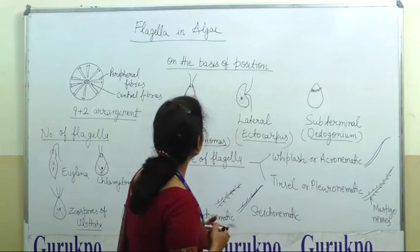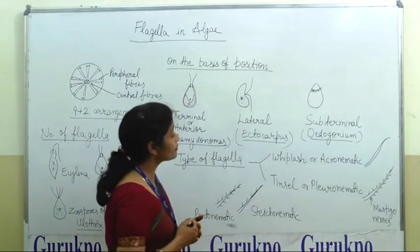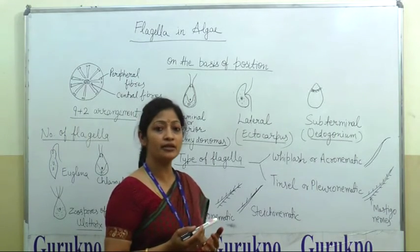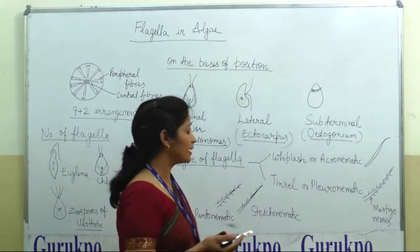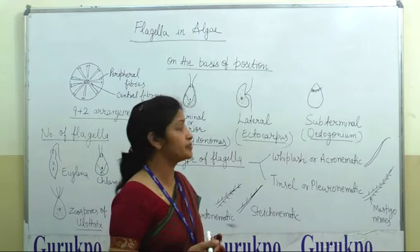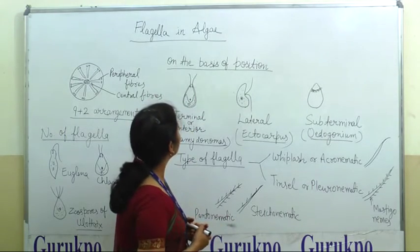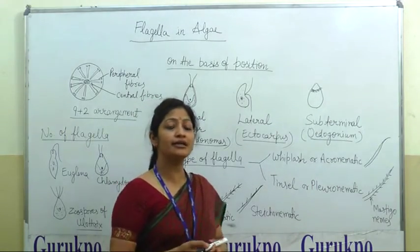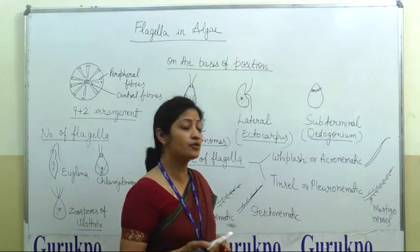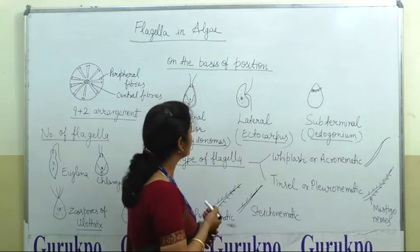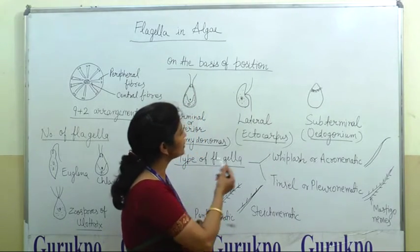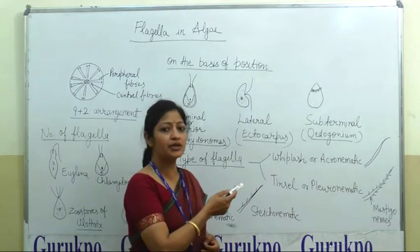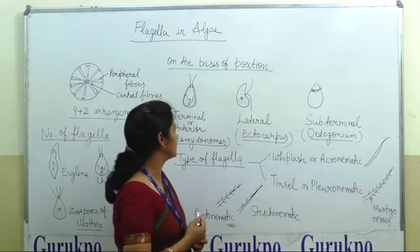We can discuss the classification of Algae on the basis of their flagella: number, position, and their types. On the basis of position, flagella in Algae may be categorized into three types: terminal, lateral, or sub-terminal.